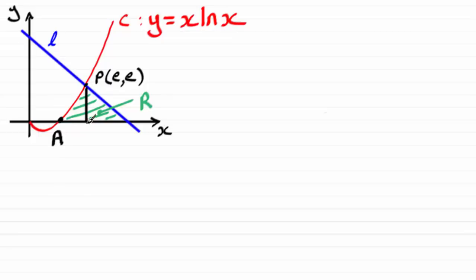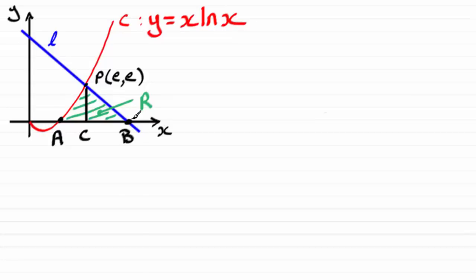We've got this point down here which I'm going to call C, where the vertical line from P crosses the x-axis. We're going to work out this area by integrating x·ln(x) with respect to x between the limits A and C. I'll need to work out the coordinates of A in order to do that. Then I'll go on to work out the area of the triangle — and I'll need to know where line L crosses the x-axis, which I'm going to call point B.